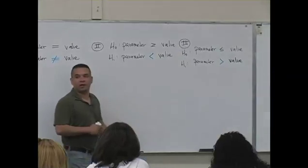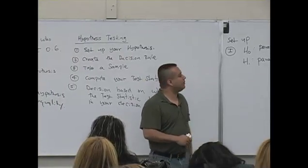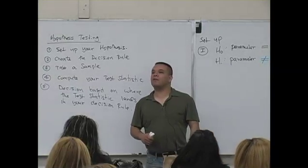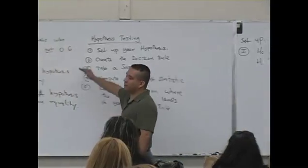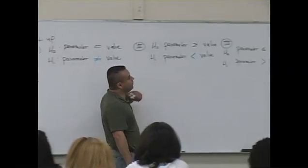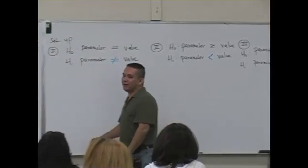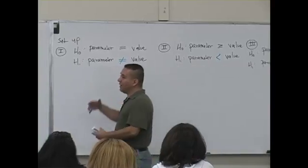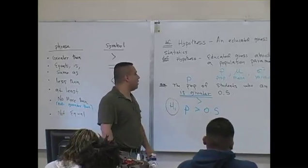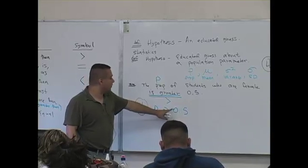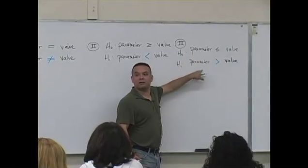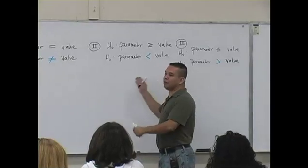The null and alternate hypotheses are labeled appropriately for each setup. It's going to be only one of the three types based on whatever the claim is — and that 'or' is exclusive, not inclusive, meaning it can't be both. For example, if the claim is that the proportion of female students is greater than 0.5, that maps to the third setup. You don't have to do all three — it's only one.